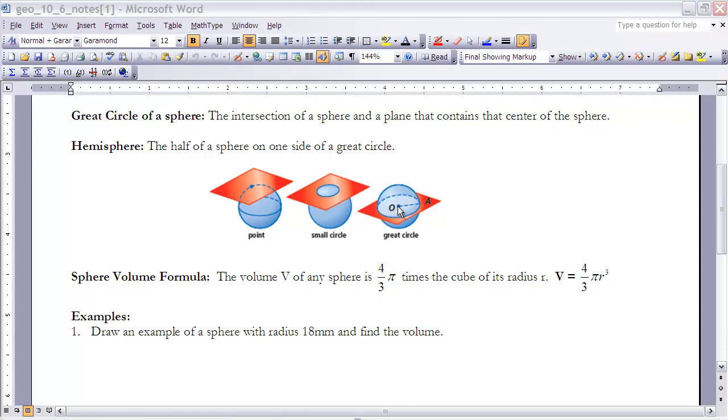If it contains the center point, then we call it the great circle. So anytime a plane intersects a sphere in such a way that the center is a part of that intersection, we say that we have the great circle for that sphere.